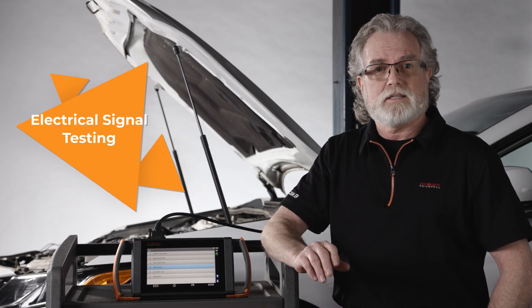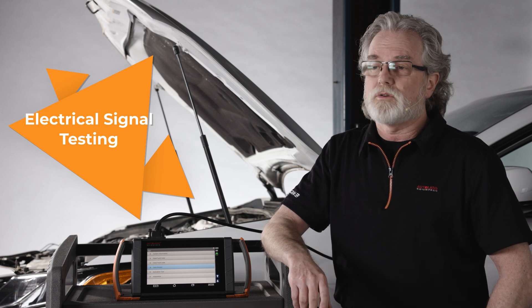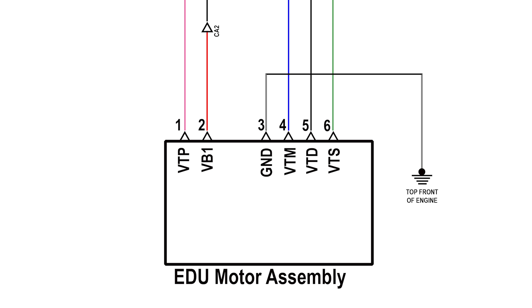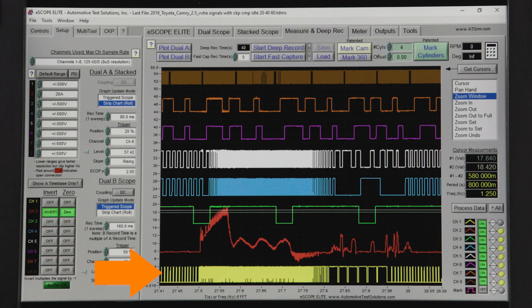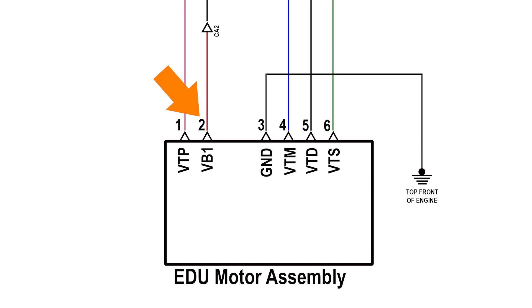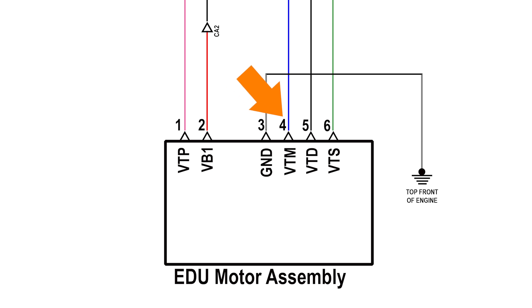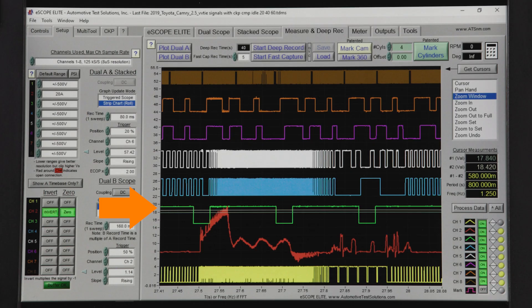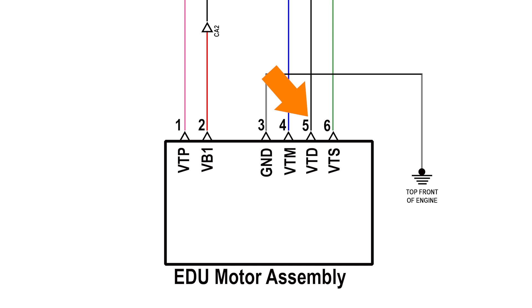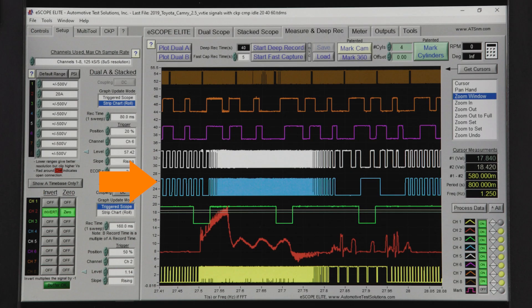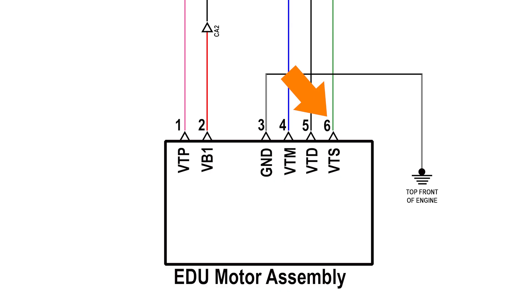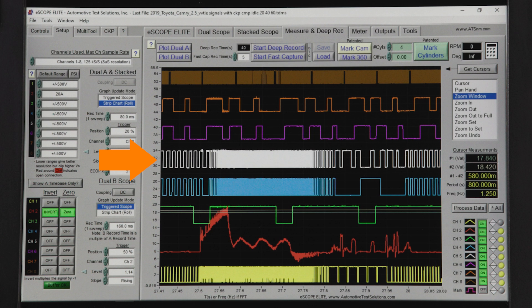We can also test the electrical signals in the case that you need to diagnose a circuit fault code. The VVTIE EDU assembly has a 6-wire connector. Terminal 1 is VTP — motor operation request, channel 1 on our scope. Terminal 2 is VB1, battery positive supply from the VVT relay, channel 2 on our scope measuring current. Terminal 3 is chassis ground, not monitored on our scope — tested independently with a voltage drop test. Terminal 4 is VTM diagnostic signal output, channel 3 on our scope. Terminal 5 is VTD motor rotation signal output, channel 4 on our scope. Terminal 6 is VTS motor rotation signal output, channel 5 on our scope.